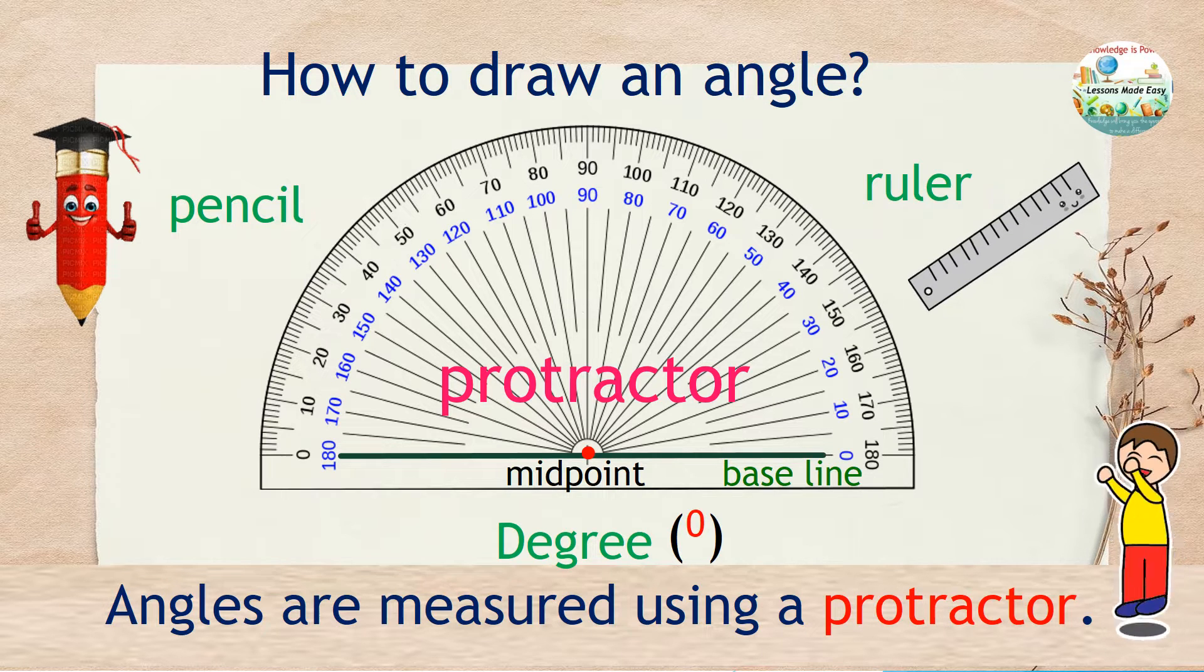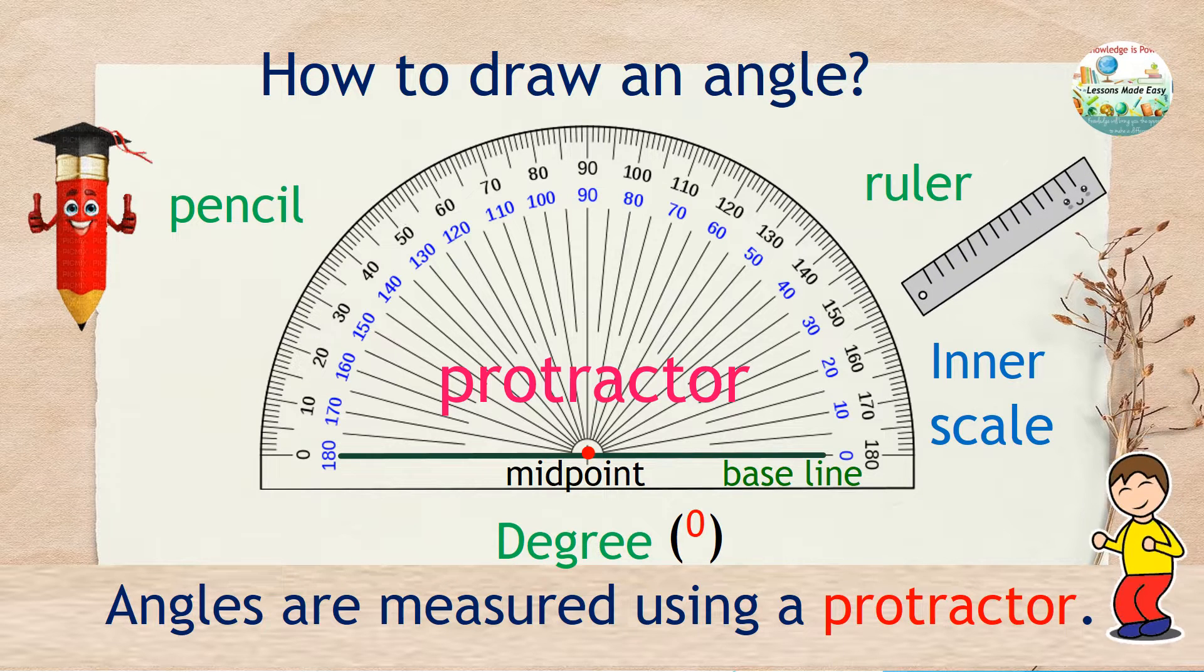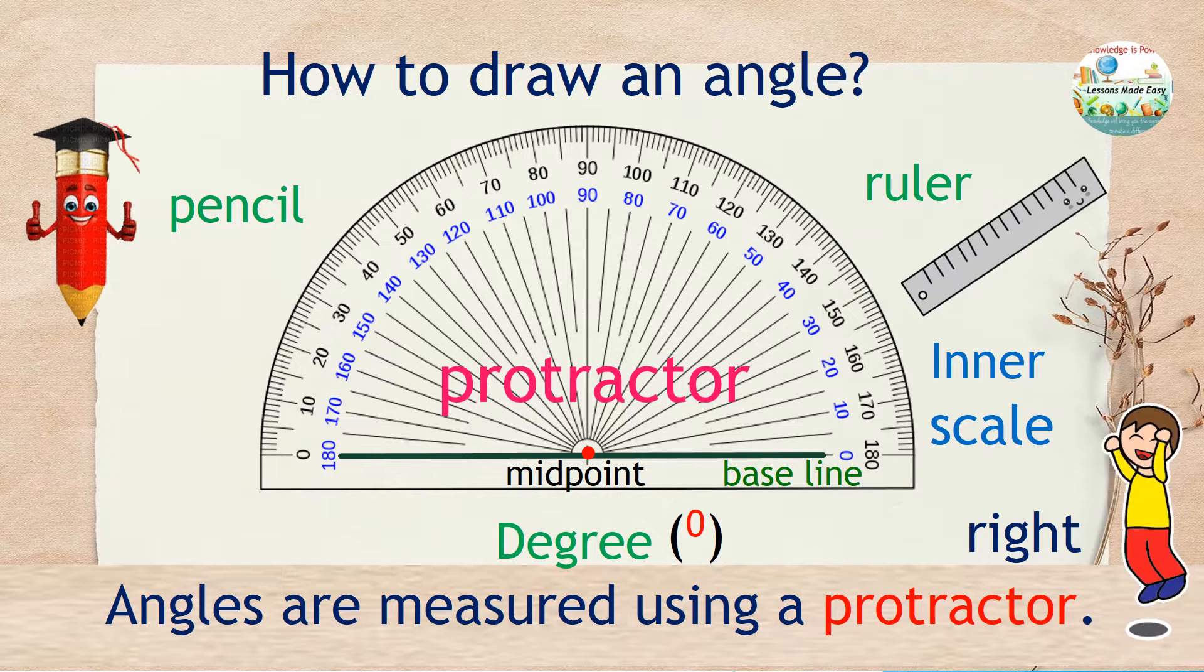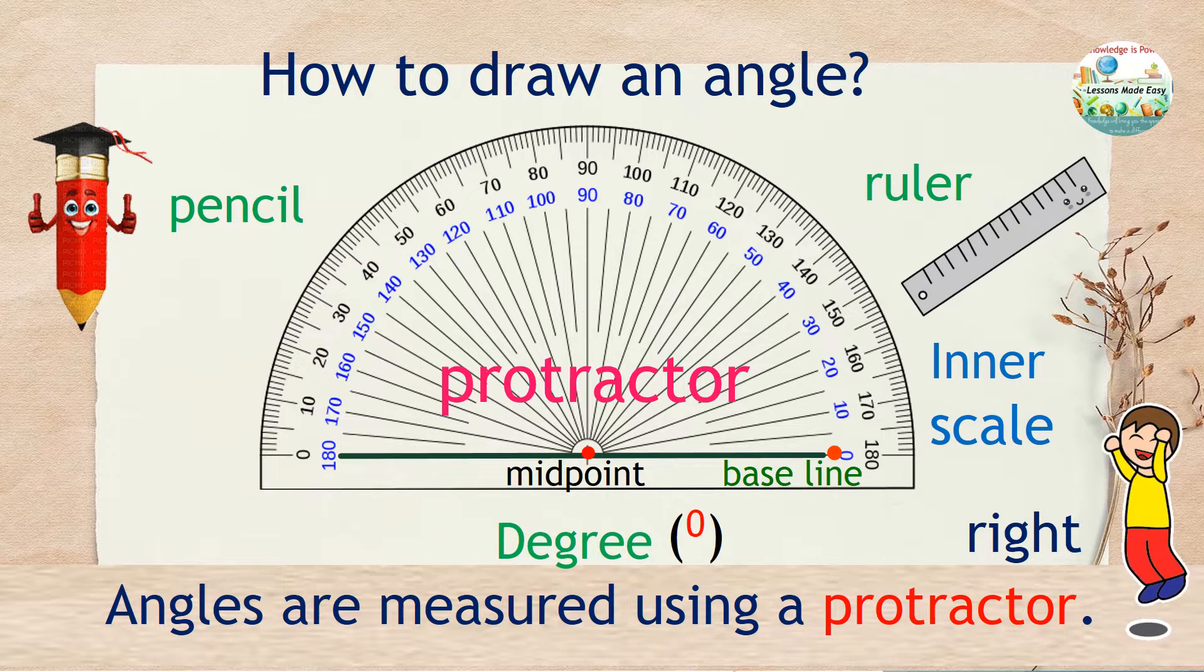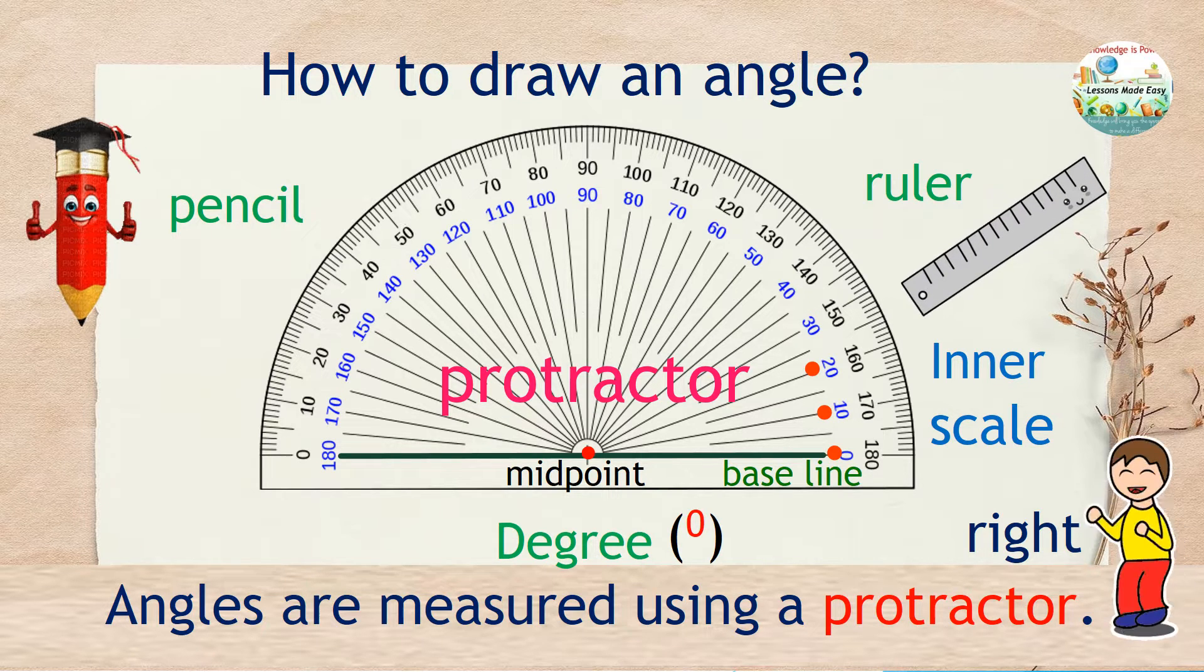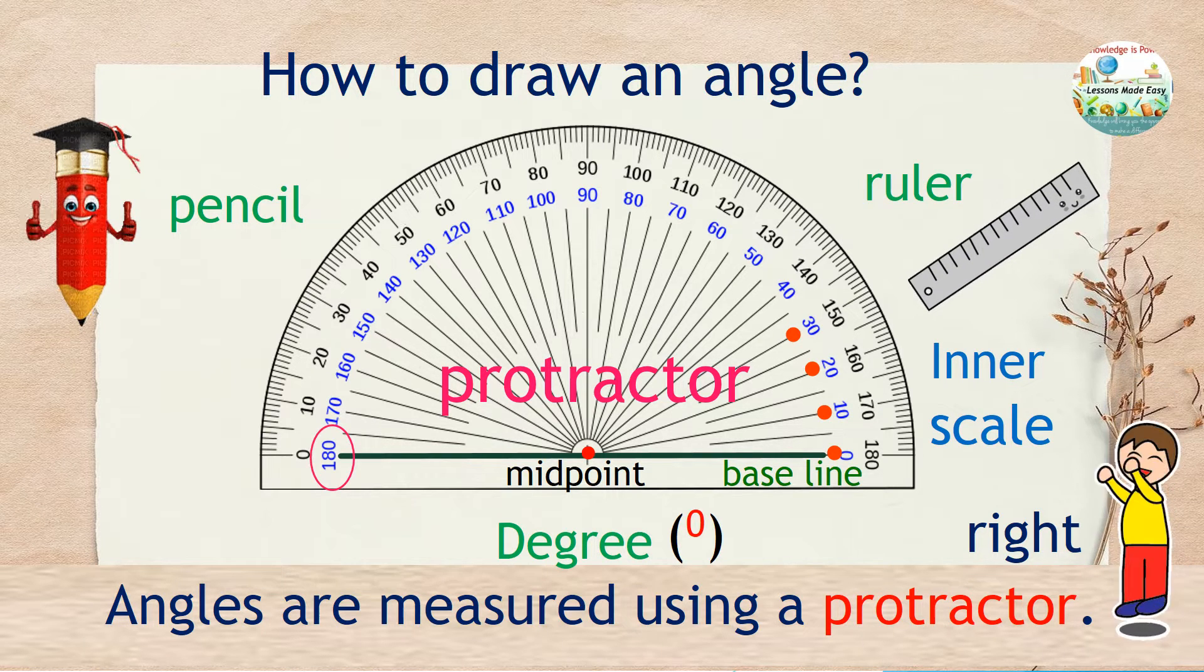In this one, we have the inner scale in blue color. This is used when the angle is opened from the right side. As you can see, from the right you start with 0 degrees, 10, 20, 30, and so on. And at the end, you'll find 180 degrees.